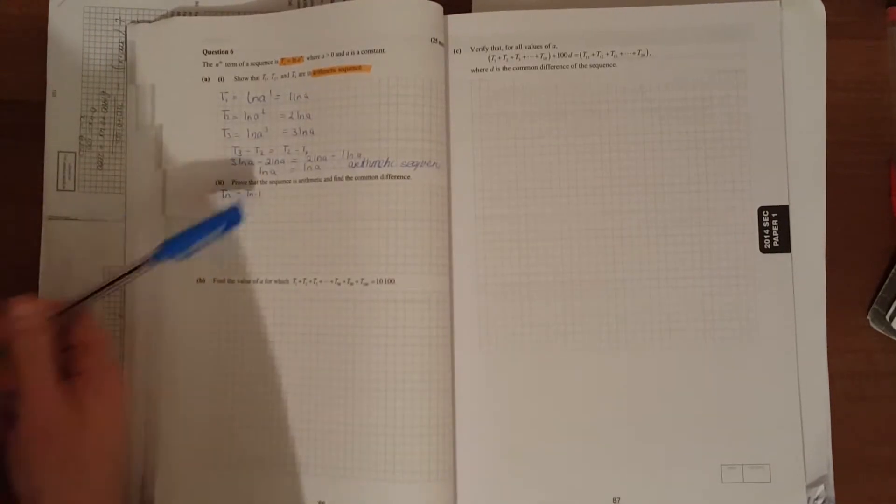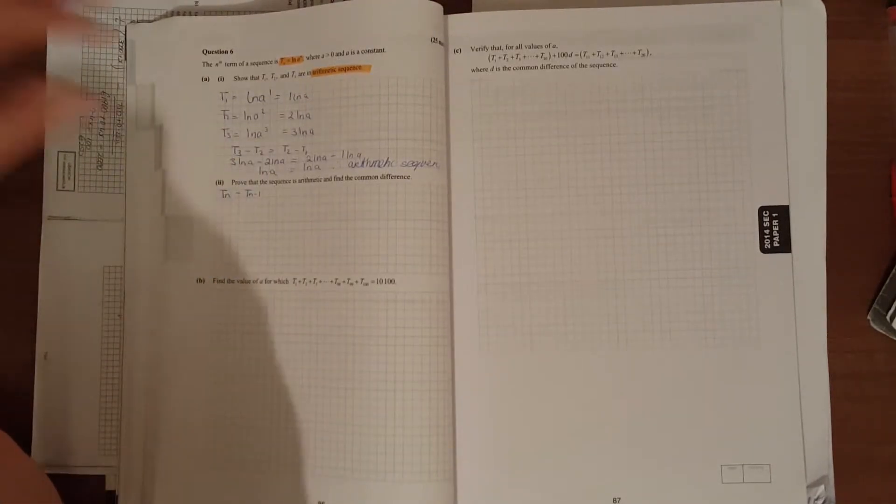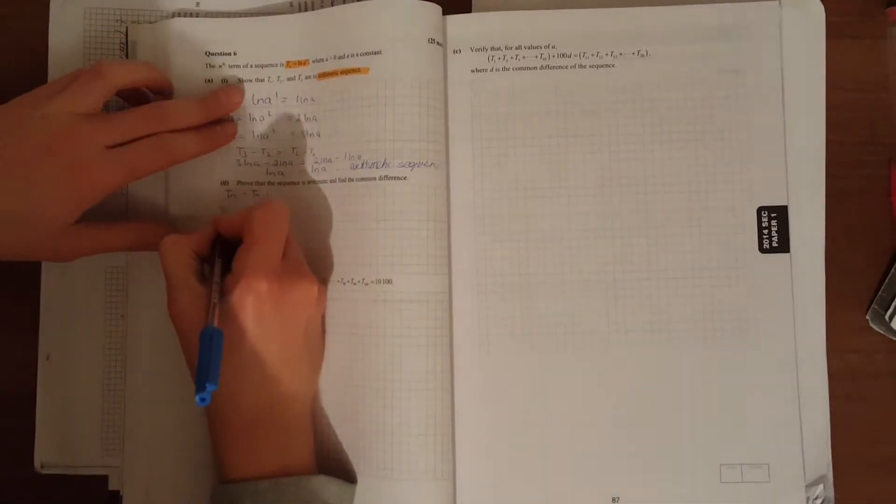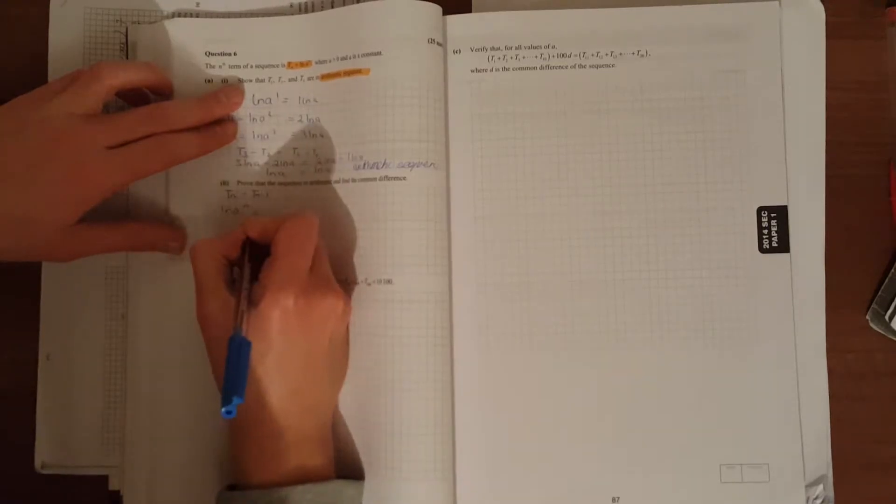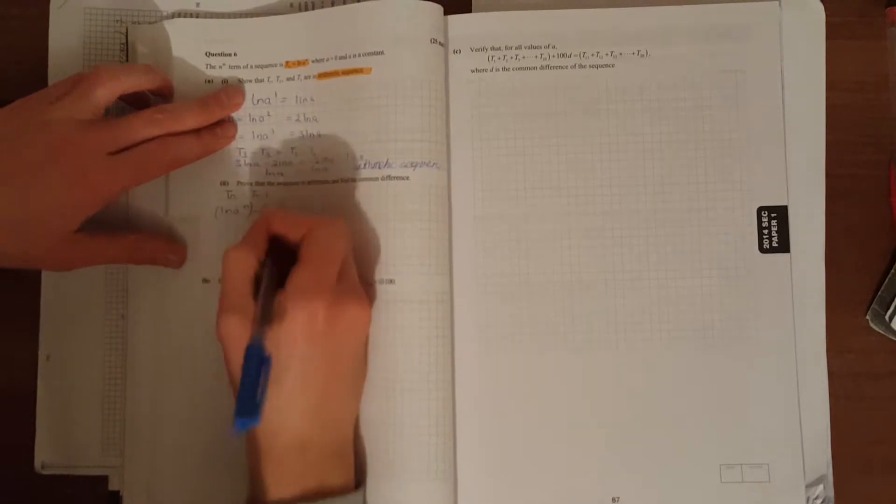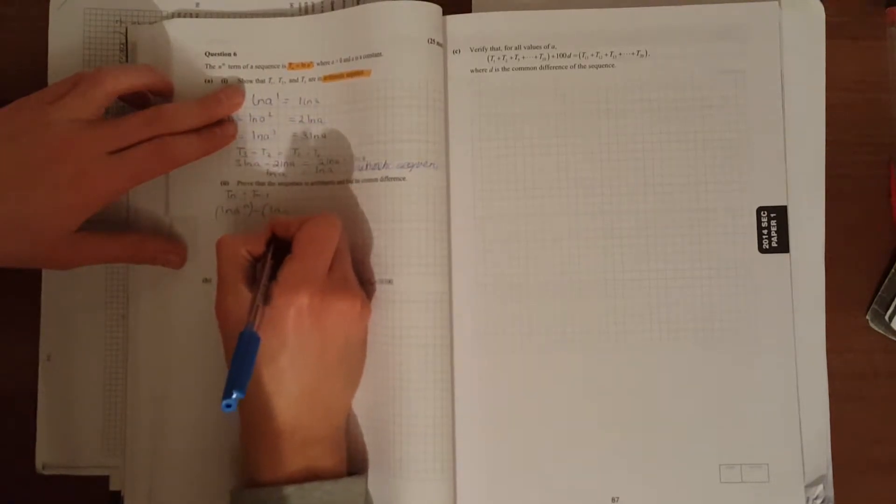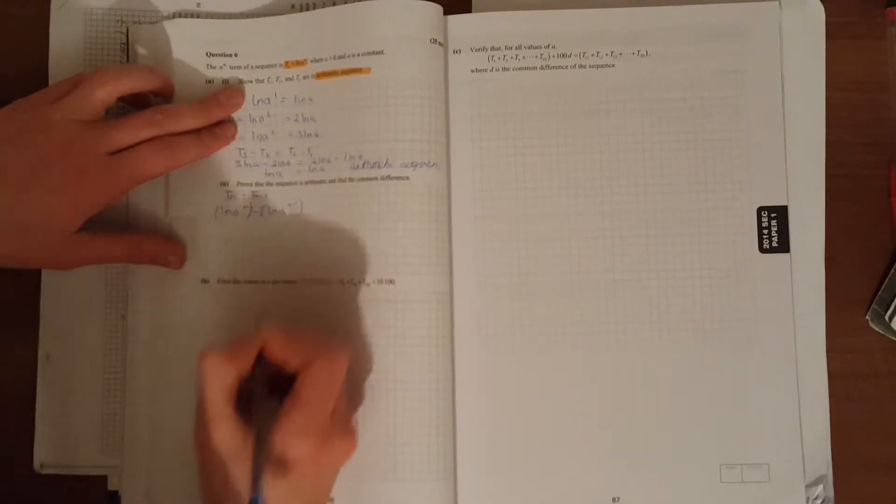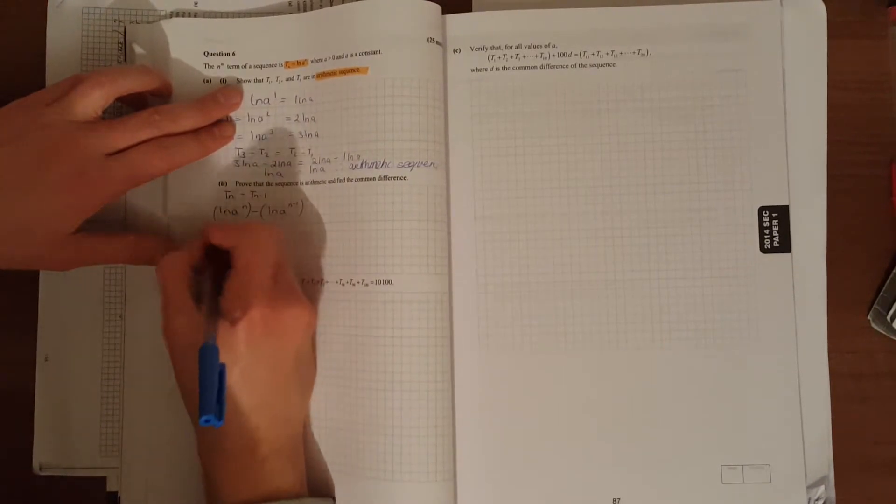In general, tn minus t(n-1) should give us the same first difference, and we know the difference is ln(a). So t(n) is ln(a^n) minus t(n-1), which is ln(a^(n-1)). Again, bring the powers down in front.